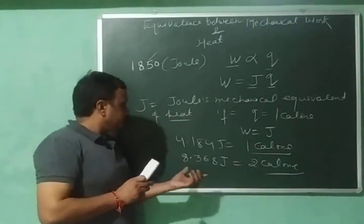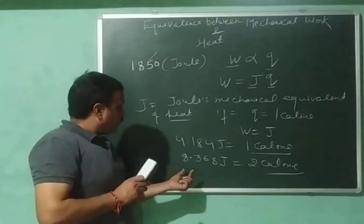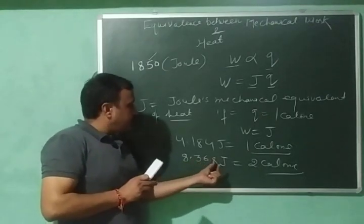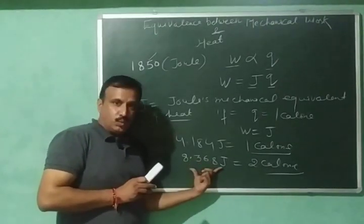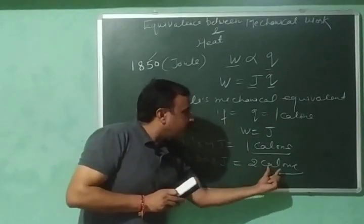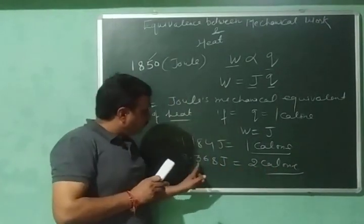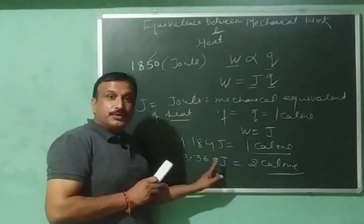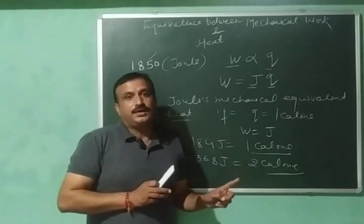If I multiply this equation by 2, then 8.368 Joule work will produce 2 calorie of heat. So, the definite amount of work done will produce same amount of heat every time.